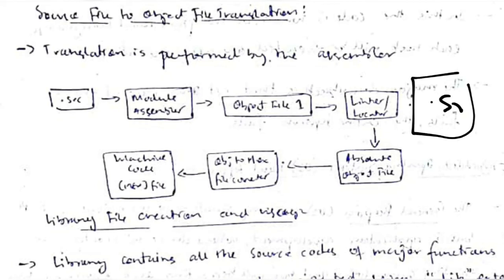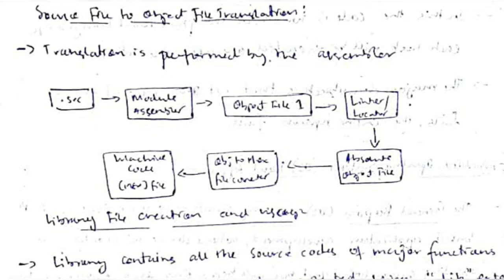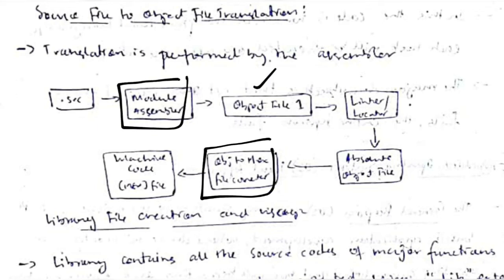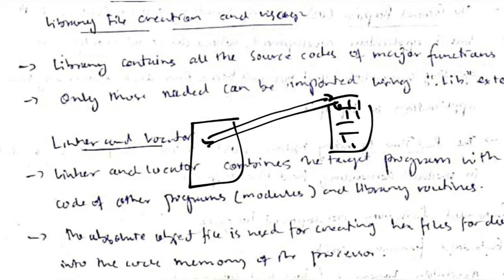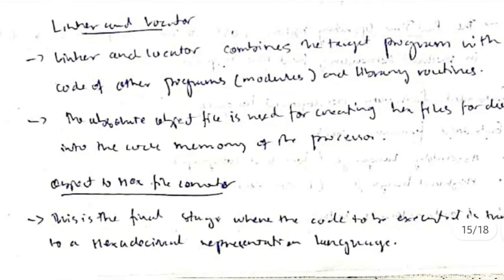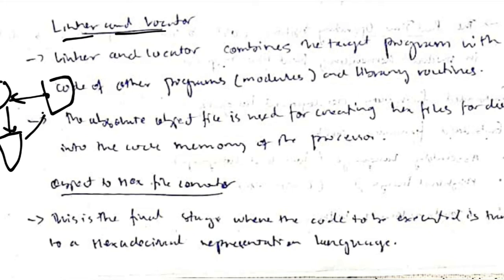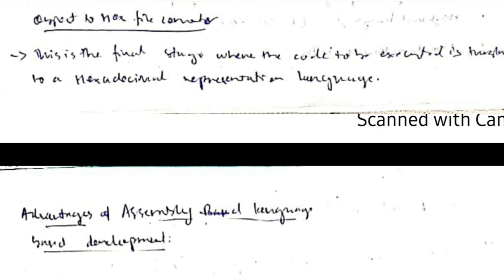Converting assembly source code to binary involves three steps: first, an assembler creates an object file; second, the object is converted to a hexadecimal file; third, the hex file is converted to binary. Libraries store large source codes so that you can call a library function when needed instead of rewriting code. Linkers and locators link modules and locate memory addresses, and are also used in converting source code to hexadecimal files.